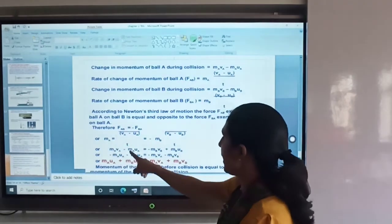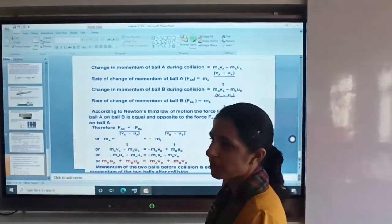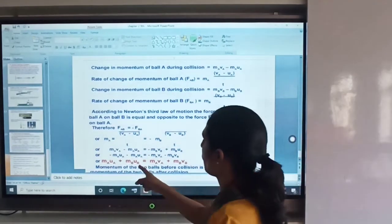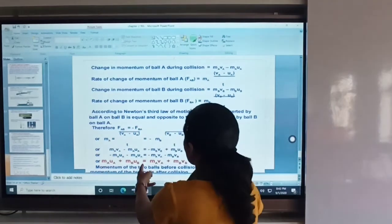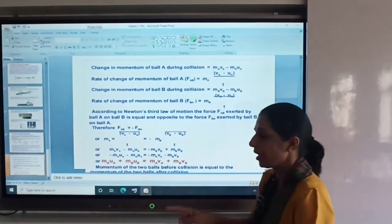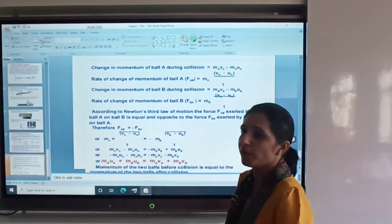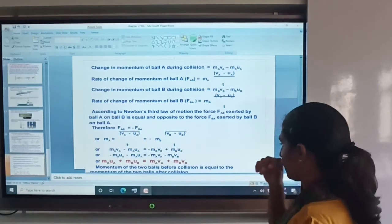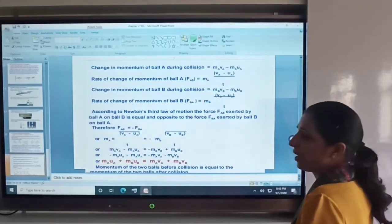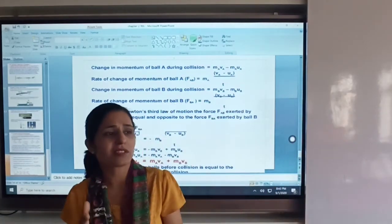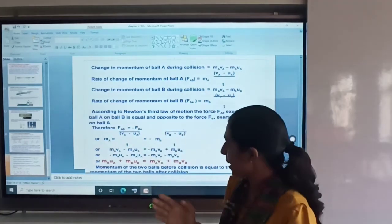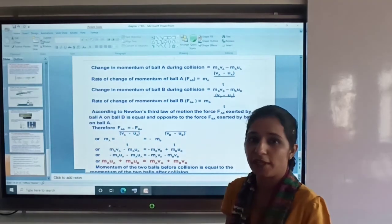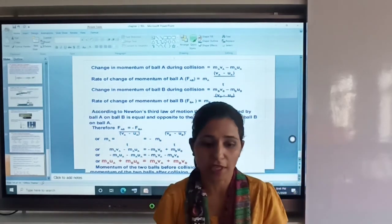Rearranging, we get M_A*U_A plus M_B*U_B before collision is equal to M_A*V_A plus M_B*V_B after collision. Before collision or after collision, the momentum is always equal. So this is the end of chapter 2, conservation of momentum. That's all for today. Thank you.